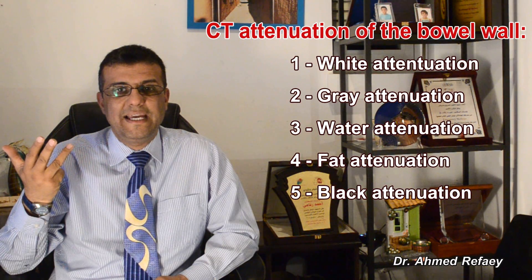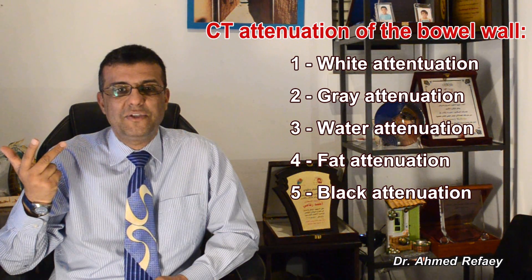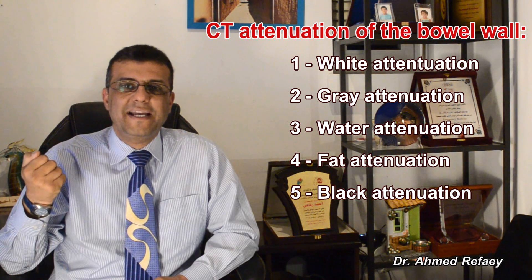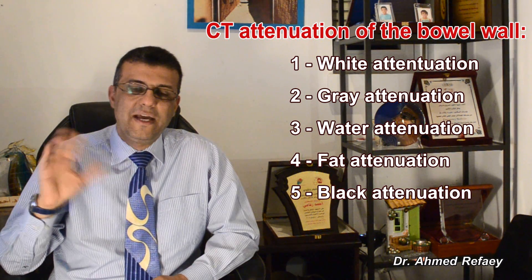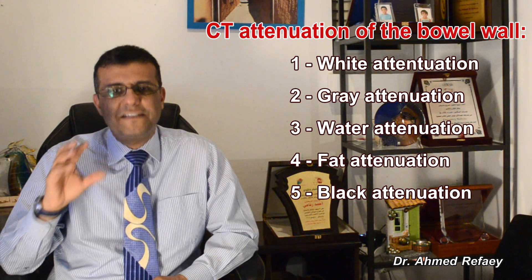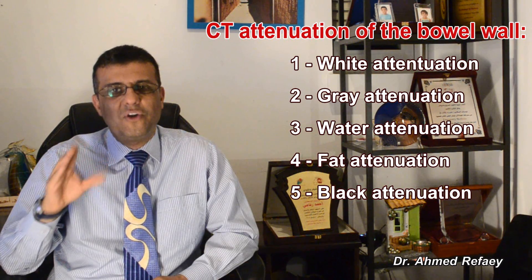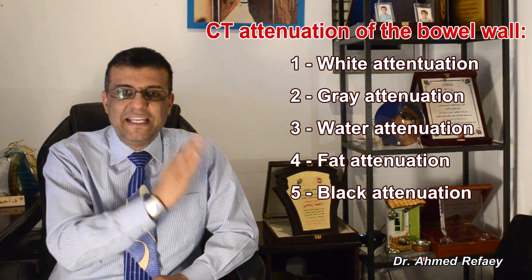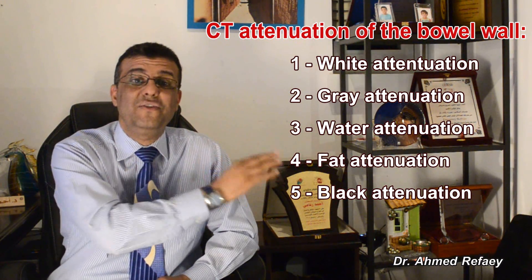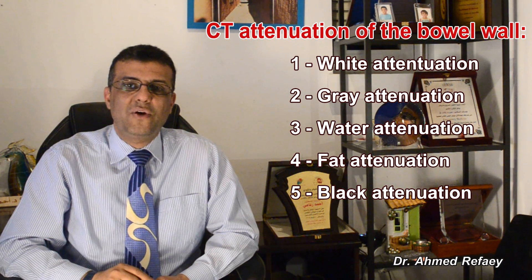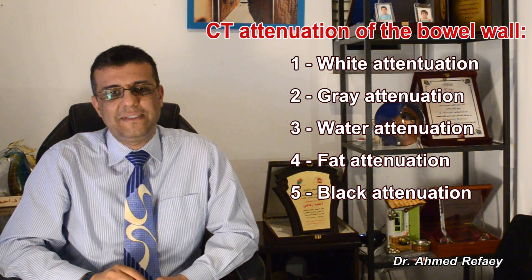The last differentiating feature is CT attenuation of the bowel wall. There are five categories: white attenuation, gray attenuation, water attenuation, fat attenuation, and black attenuation. Starting with white attenuation — it means enhancement of the wall of the bowel to the same degree as the adjacent venous structures, usually seen in inflammatory bowel disease like Crohn's and ulcerative colitis, as well as in shock bowel syndrome.